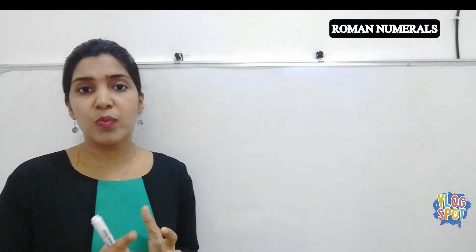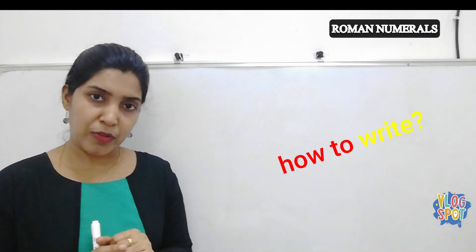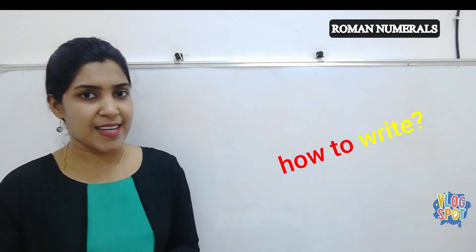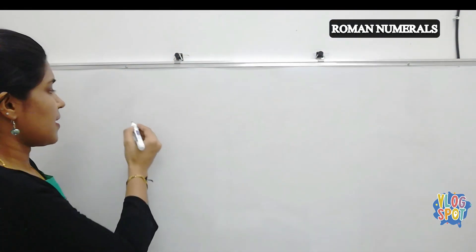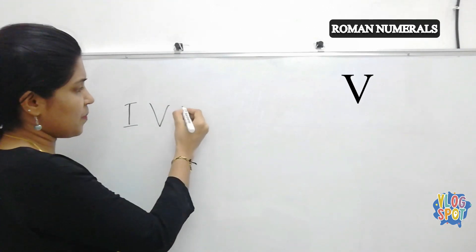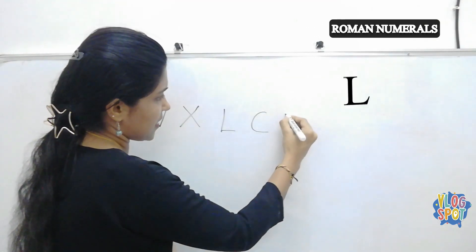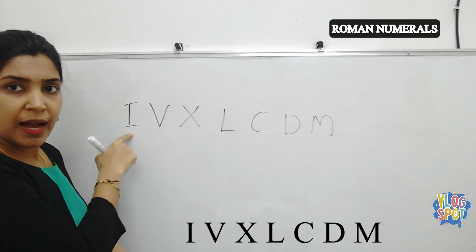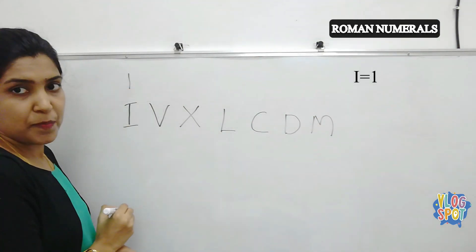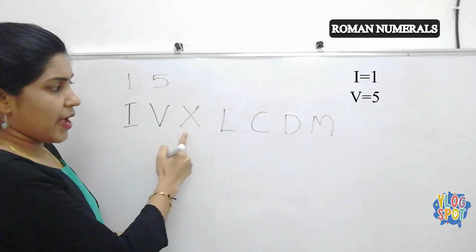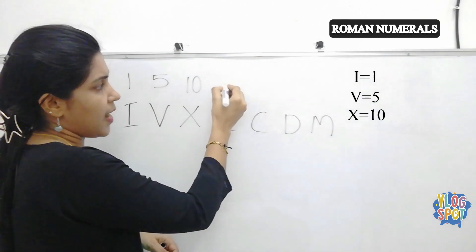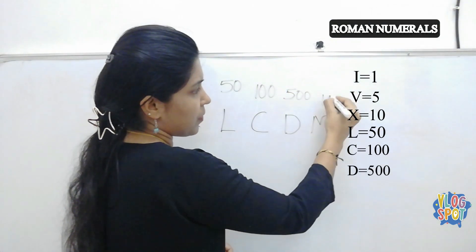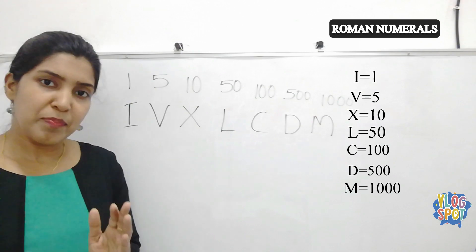Before explaining the rules of Roman numerals or how to write them, let me introduce the seven important symbols for notation in Roman numerals. The seven important symbols are: I, V, X, L, C, D, and M. Capital I represents 1, V represents 5, X represents 10, L represents 50, C represents 100, D represents 500, and M represents 1000. These are the seven important symbols.